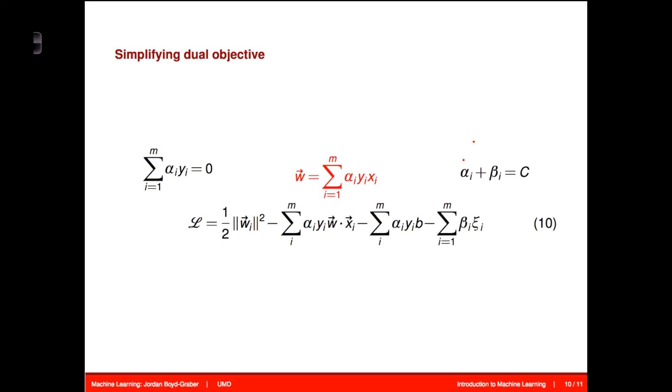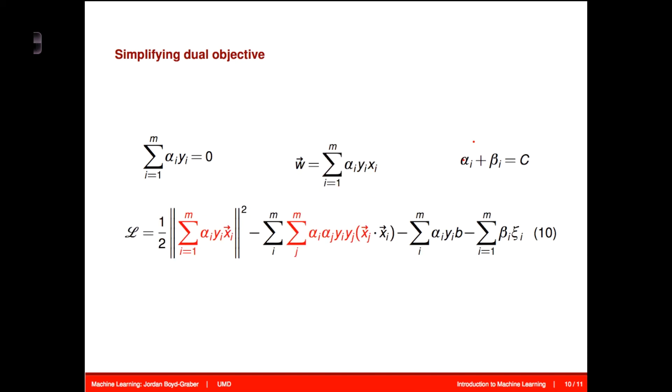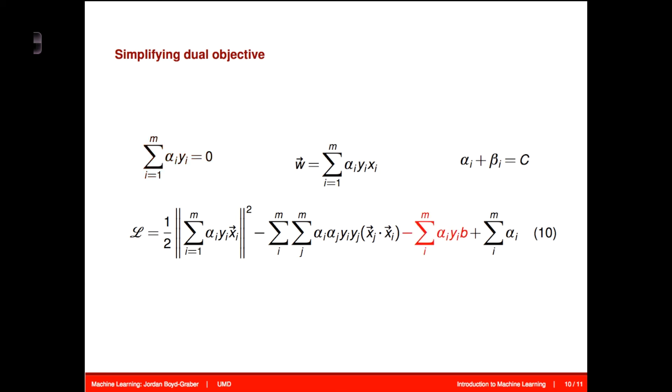So with these tidbits in hand, we can now simplify our objective function. So w, we can write in terms of these α_i y_i x_i. So every time we see w, let's replace that. And so now w is out of the objective function. Now that we know that α_i plus β_i has to be equal to C, we can now get rid of the β's in terms of α. So now the final term just becomes another α term. We can also use α_i y_i, summed over all the data, equal to zero to get rid of the penultimate term because this is just b times zero. Now that we've done the simplification, the first two terms can simplify further.